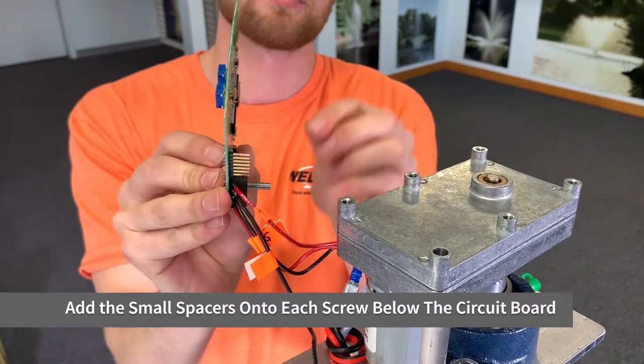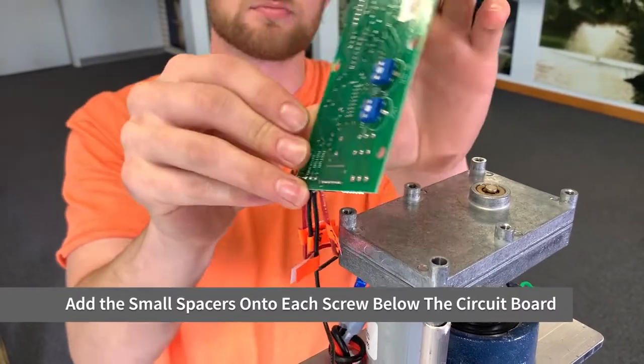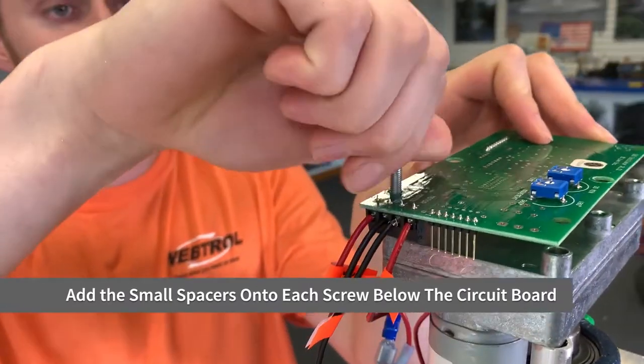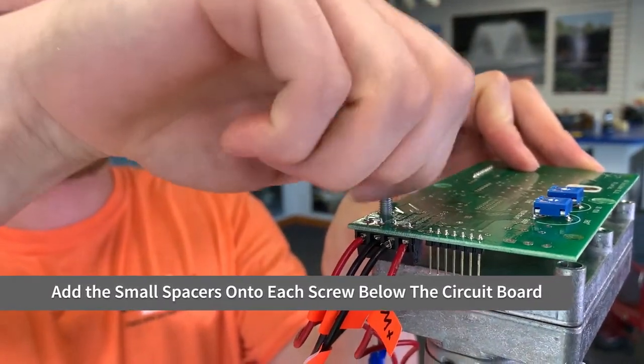Reattach the circuit board. Feed a screw through the mounting hole on the circuit board, place a spacer on the screw, then loosely thread into the oscillator control unit.